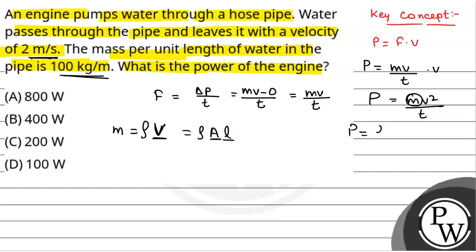So, power will be equal to rho AL v squared by t. This will be the power.